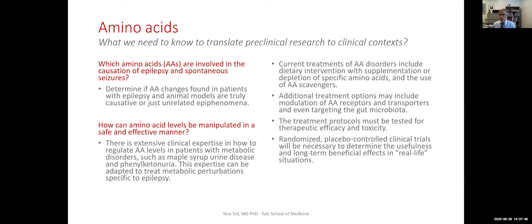There are two main ways to treat amino acid conditions in humans. One is to use diets — we tailor certain diets to people who are deficient in certain amino acids or who need supplementation with certain amino acids to compensate for their problems. Another way is to give drugs or scavengers — chemicals that bind certain amino acids and make them excrete more easily into the urine, getting rid of them faster via the kidneys.